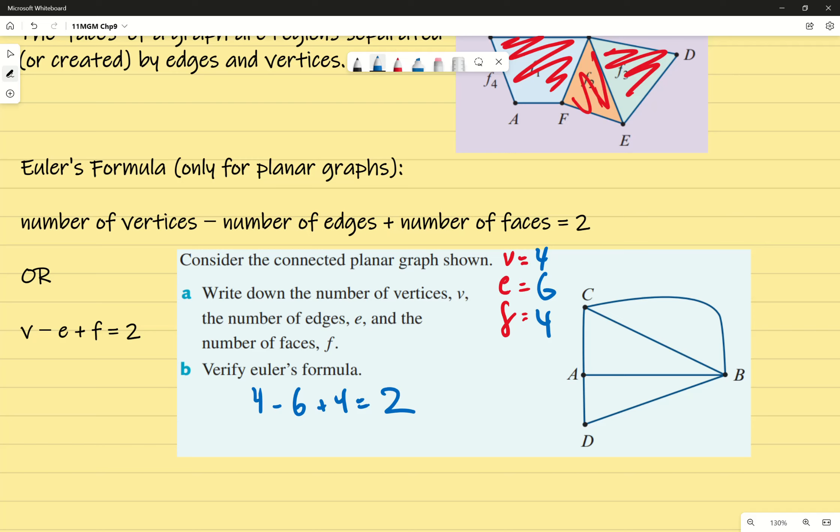Therefore—have you guys seen those three dots before? It means therefore—Euler's formula applies. Pretty straightforward. Any questions? Any fuzziness around the topic?